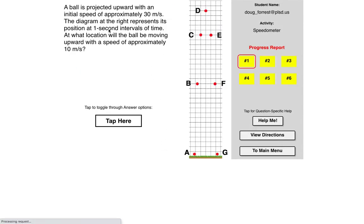So I found that it's really important to read this information. A ball is projected upward with an initial speed of approximately 30 meters per second. The diagram at right represents points at one second intervals of time. What will the ball be moving upward with 10 meters per second? So it's starting on the left, going to the right.